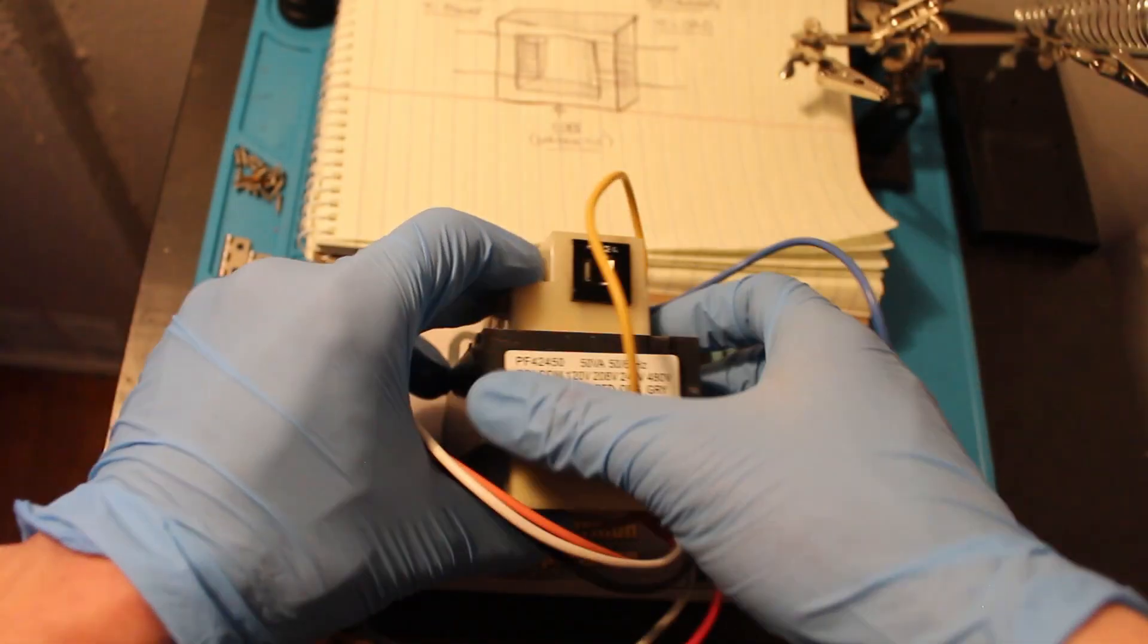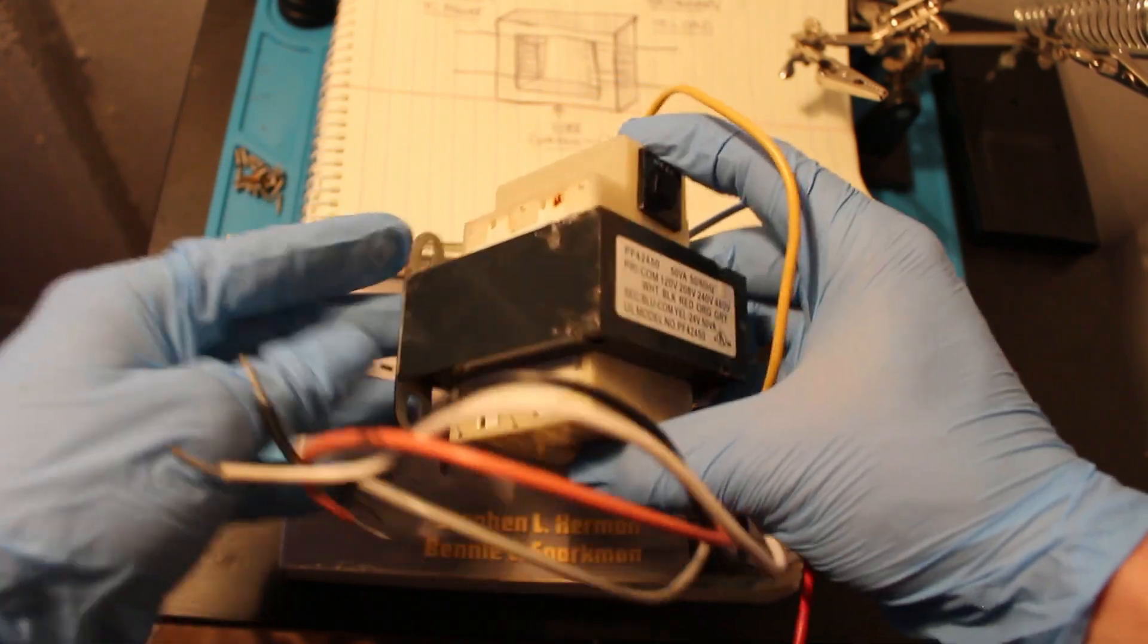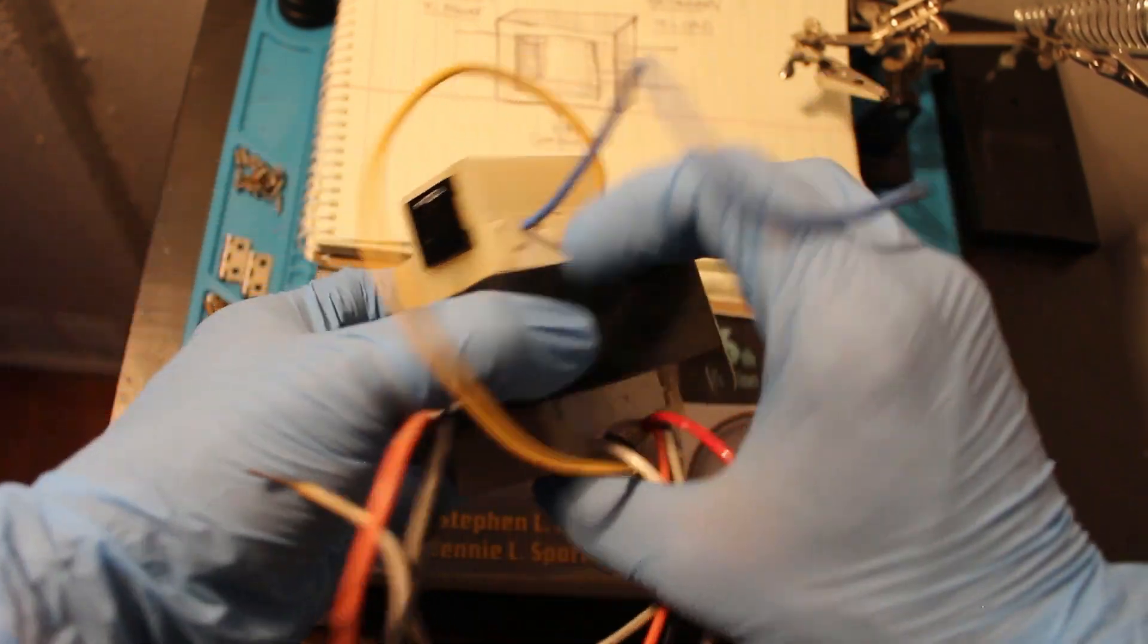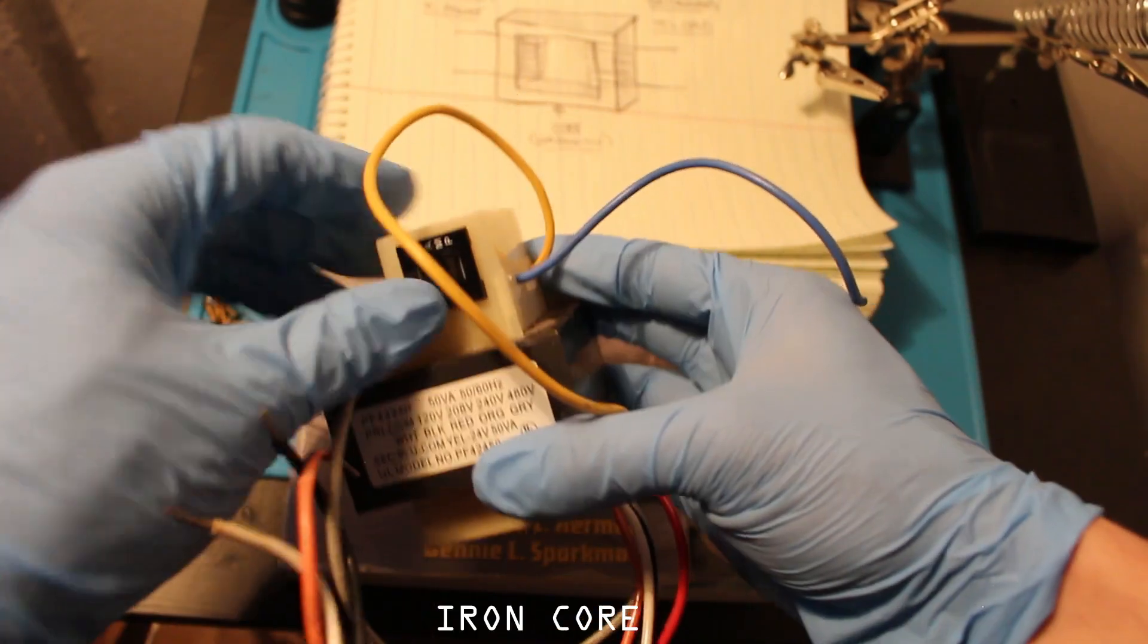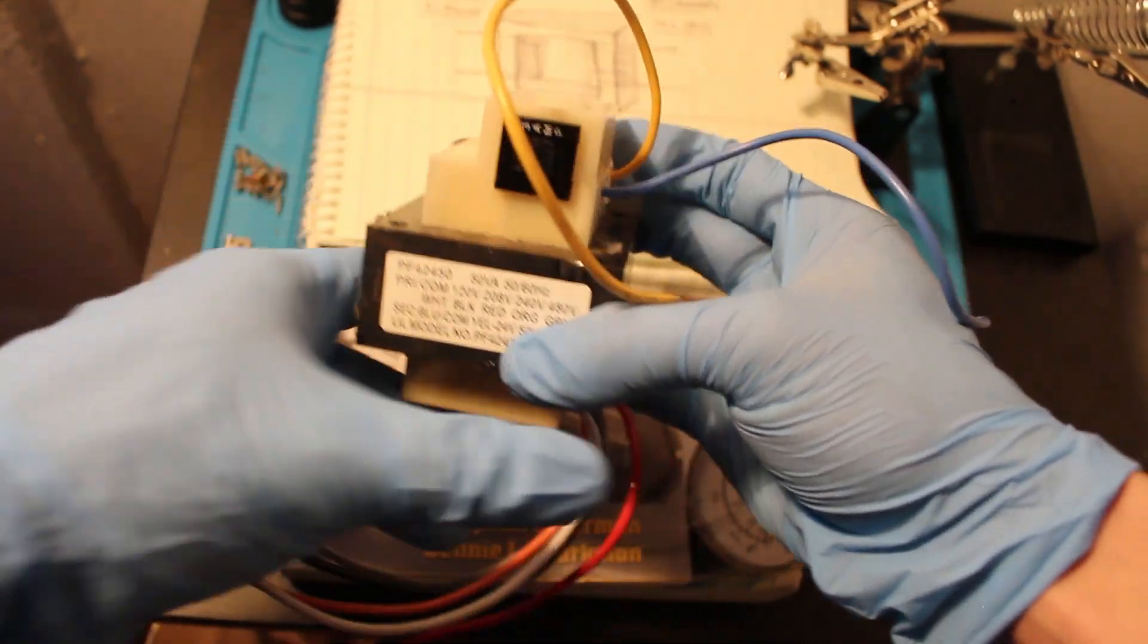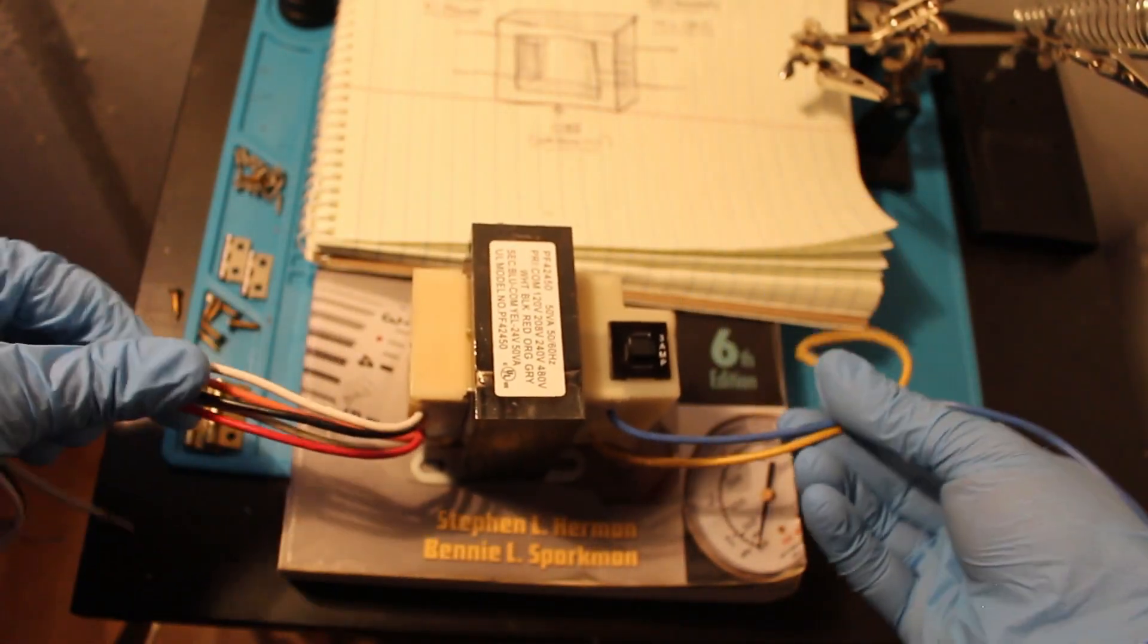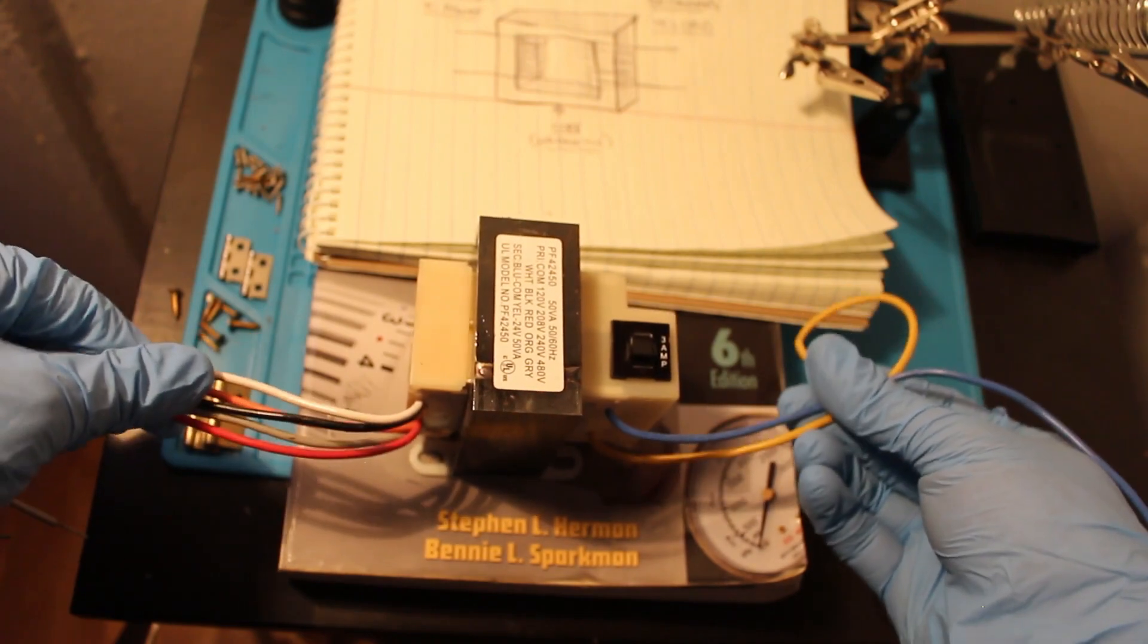So let's take a better look at our transformer. Here are our mounting brackets. Going around the middle is our core. This actually has a little switch built into it, a built-in breaker reset switch. And if we look carefully, these two sides are separated.